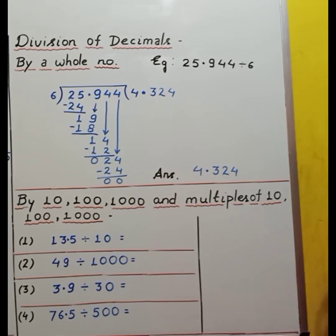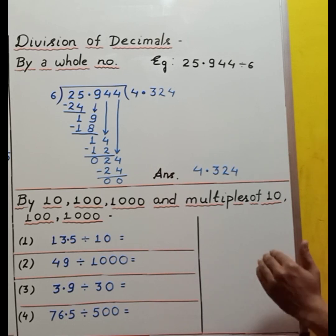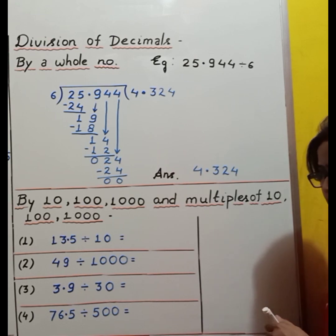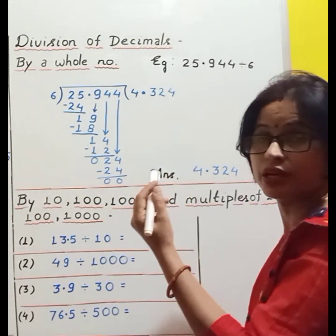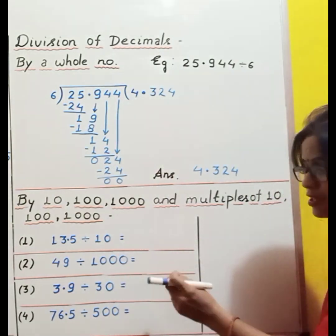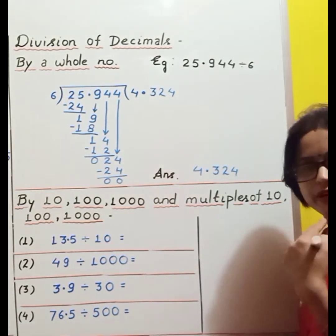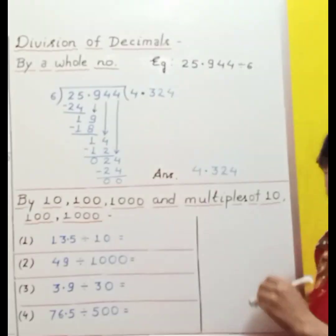Now, division of decimals by 10, 100, or 1000. When a decimal is divided by 10, 100, or 1000, the decimal point is shifted to the left-hand side according to the number of zeros. If divided by 10, the decimal shifts left by one place; divided by 100, it shifts left by two places; divided by 1000, it shifts left by three places.